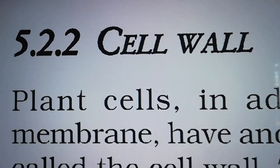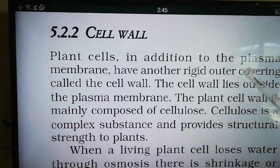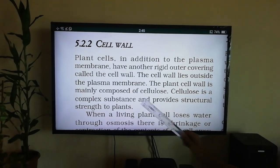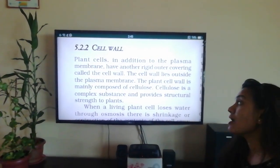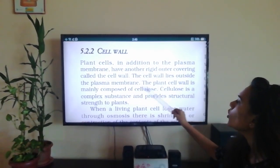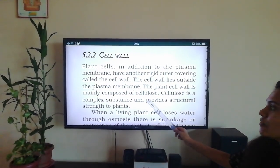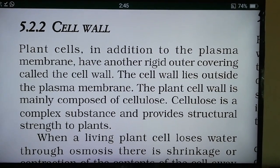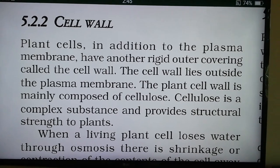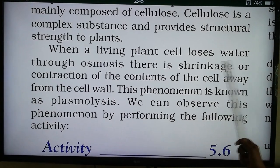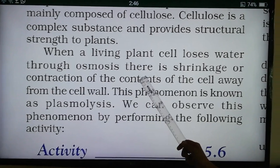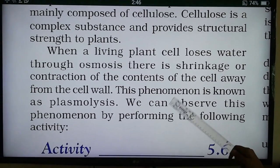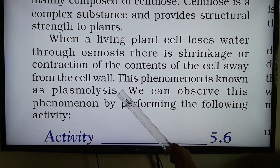The second topic we will study is the cell wall. Plant cells, in addition to the plasma membrane, have another rigid outer covering called the cell wall, which lies outside the plasma membrane. The plant cell wall is mainly composed of cellulose, which is a polysaccharide. Cellulose is a complex substance and provides structural strength to plants. When a living plant cell loses water through osmosis, there is a shrinkage or contraction of the contents of the cell away from the cell wall. This phenomenon is known as plasmolysis.